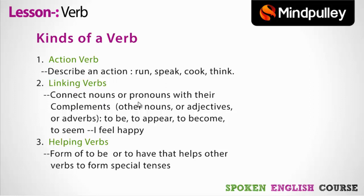Next, linking verbs. Linking verbs connect nouns or pronouns with their complements — other nouns, adjectives or adverbs — like 'to be', 'to appear', 'to become', 'to feel'. For example: 'I feel happy.' Here, if I put I equals happy — 'I was happy' — they may have approximately the same meaning. So we can say 'feel' is an equal sign verb, a linking verb. Next, helping verbs. Helping verbs are forms of 'to be' or 'to have' that help other verbs to form special tenses. Yaani ki jo verbs help karti hain kisi verb ki ek special tense banane mein, unhe hum helping verbs kehte hain.